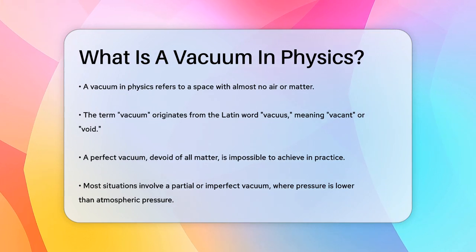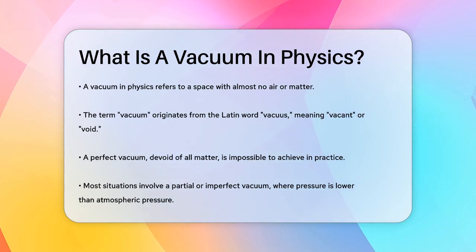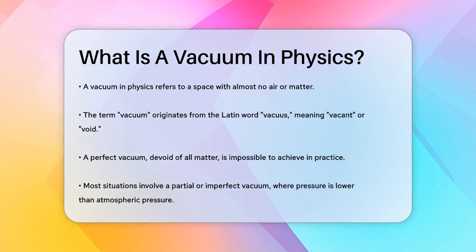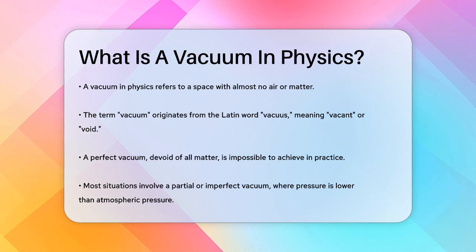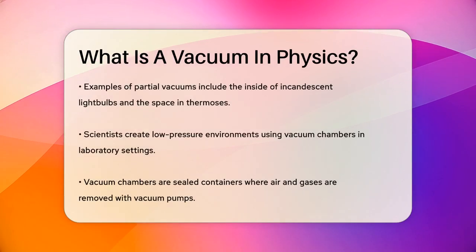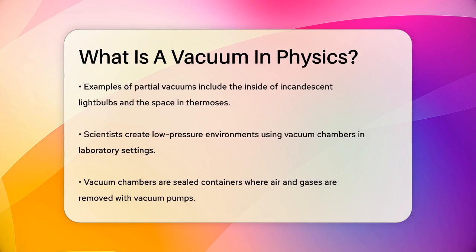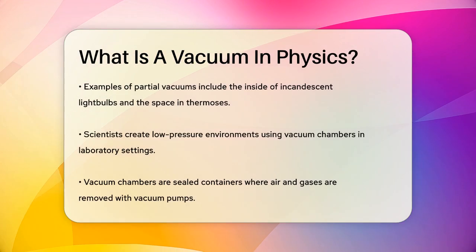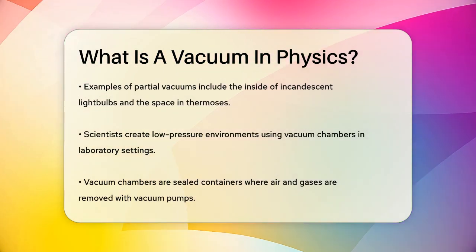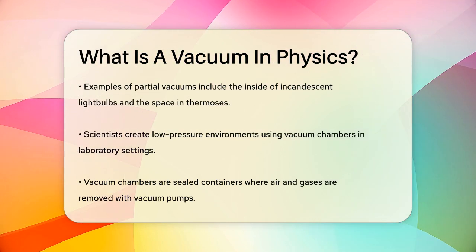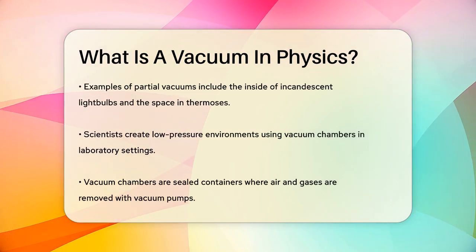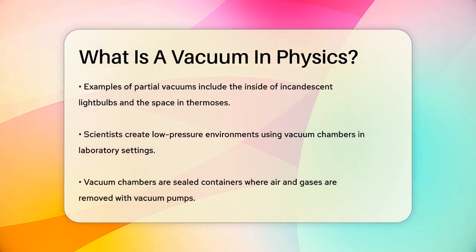However, achieving a perfect vacuum where there is absolutely no matter is impossible in practice. Instead, what we often deal with is a partial or imperfect vacuum. A partial vacuum is an area where the pressure is much lower than atmospheric pressure. For example, the inside of an incandescent light bulb or the space between the glass walls of a thermos are considered vacuums because they have pressures significantly lower than the air pressure outside.